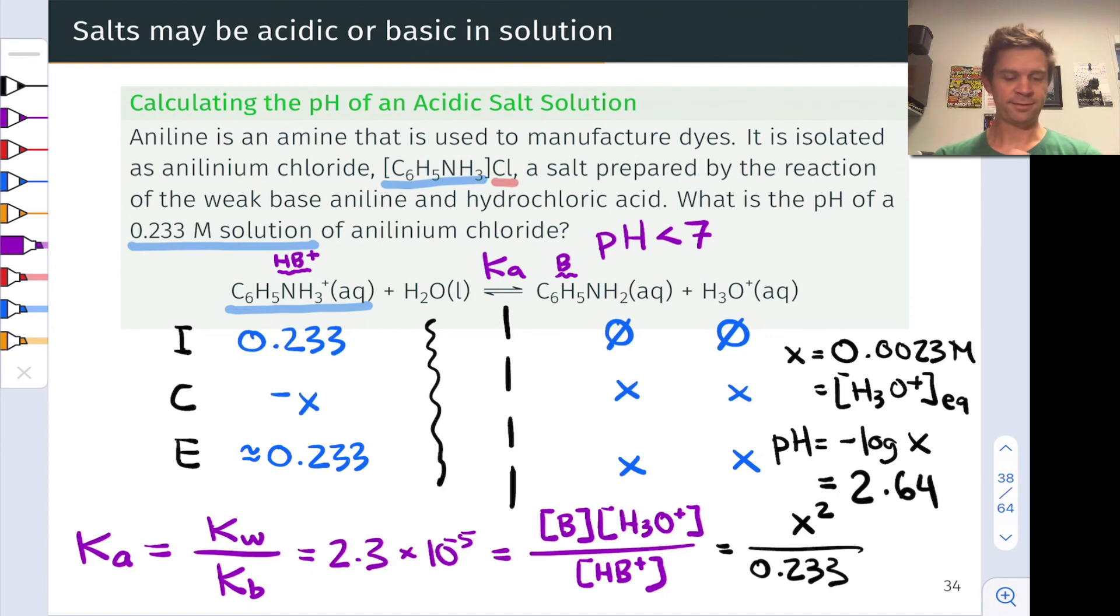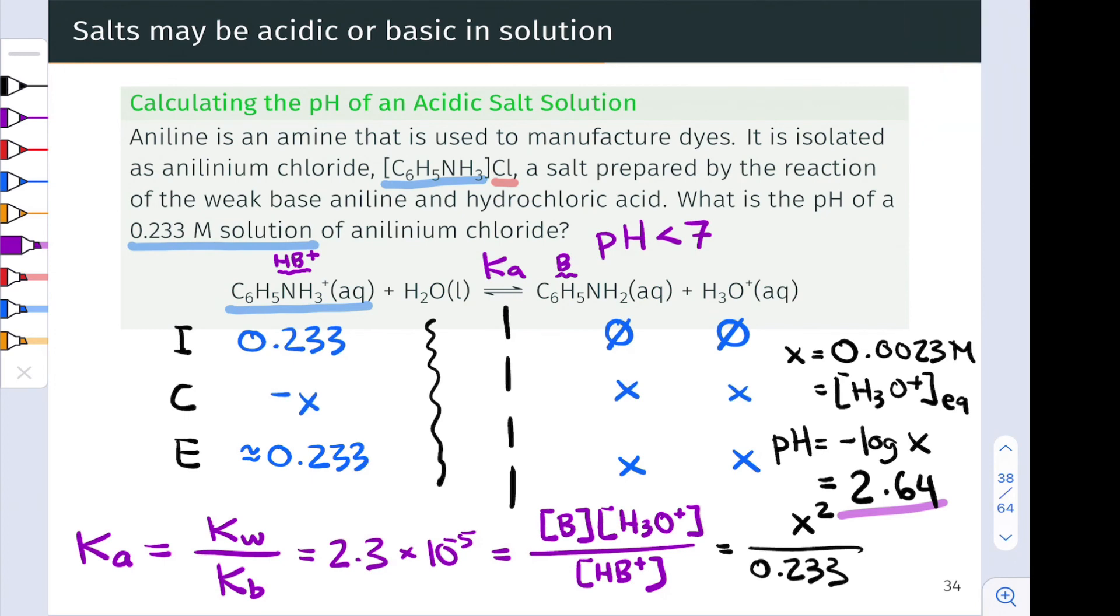So sure enough, this value is less than 7. We would absolutely expect that based on the fact that this is an acidic salt. It's a negligibly weak basic anion together with a weakly acidic cation. And 2.64 feels about right given the concentration that's relatively high, the anilinium cation at 0.233 moles per liter.